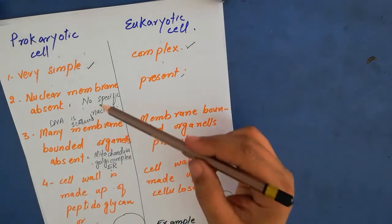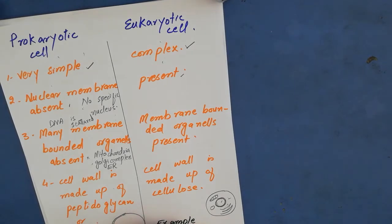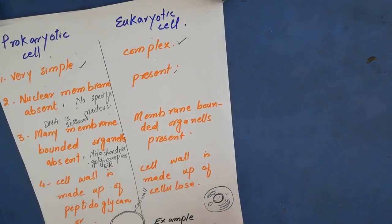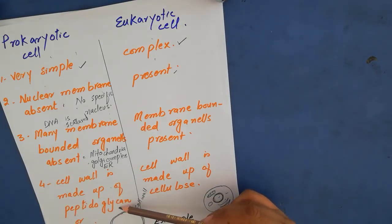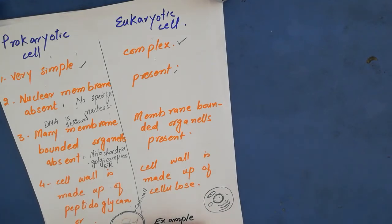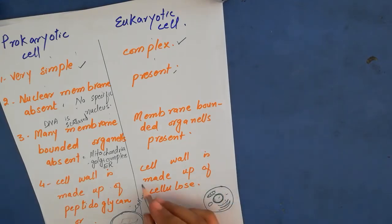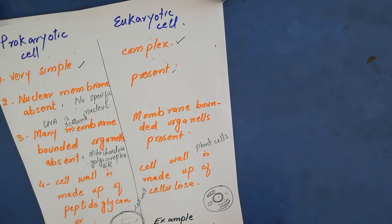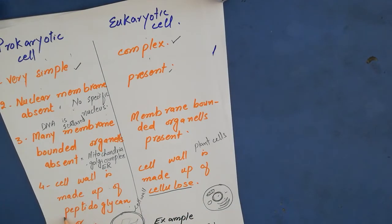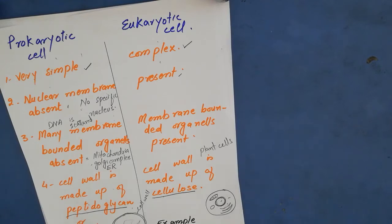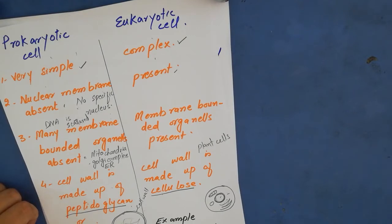Cell wall is present in prokaryotic cells, but it is not made up of cellulose. It is mostly made up of peptidoglycan or mucin. In eukaryotic cells, cell wall is absent in animal cells but present in plant cells. The cell wall of plant cells in eukaryotic cells is made up of cellulose, whereas in prokaryotic cells it is made up of peptidoglycan or mucin.